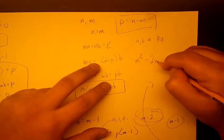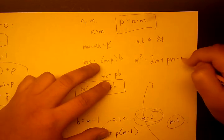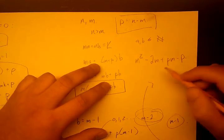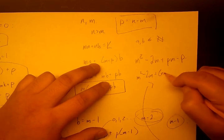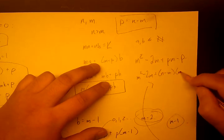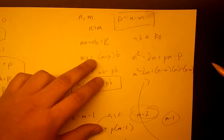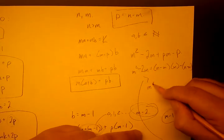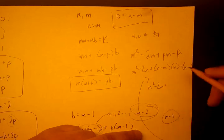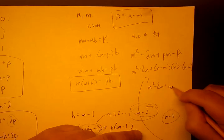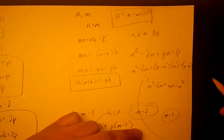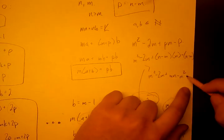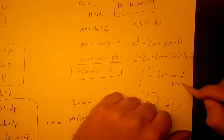We'll substitute where the p's belong. So m² - 2m + (n - m)m - (n - m). It looks messy right now, but we'll just clean it up. So we're going to get m² - 2m + mn - m². Right here we have m² minus n + m.